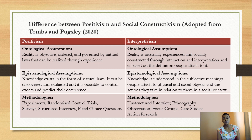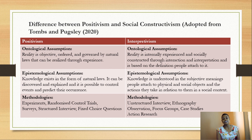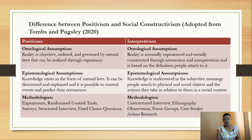This table will help you revise the differences between positivism and social constructivism. It is arranged in terms of the ontological assumption, epistemological assumption, and the methodologies applicable in each paradigm. We shall be discussing methodologies in our next lessons.